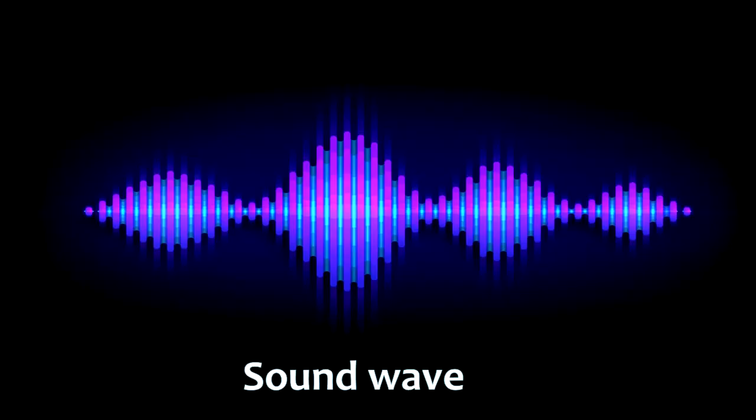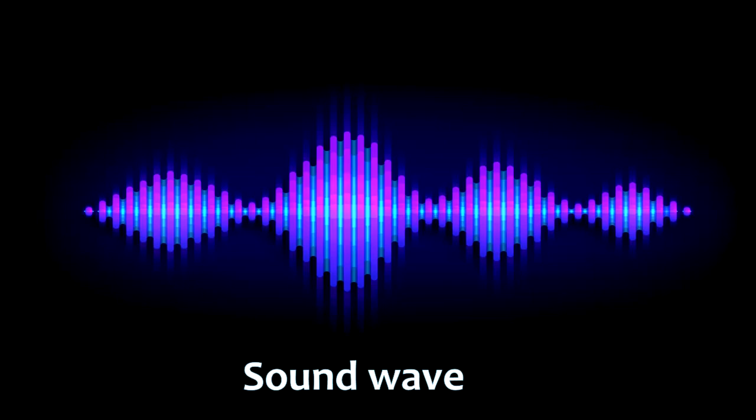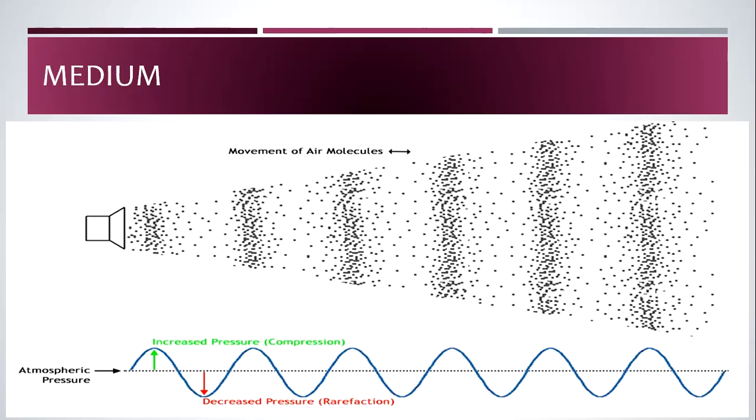Basically, a sound wave is a series of rarefactions and compressions traveling through a substance. The substance through which the wave travels is called the medium. A medium can be anything through which sound travels - it can be a solid, liquid, or gas.